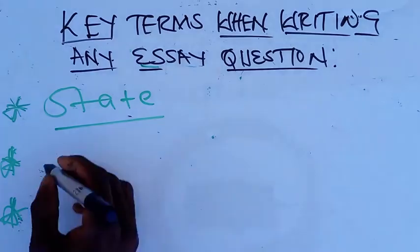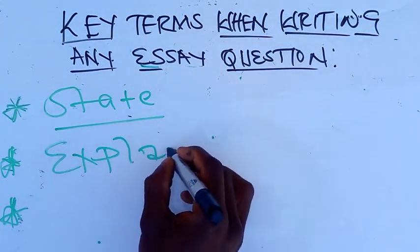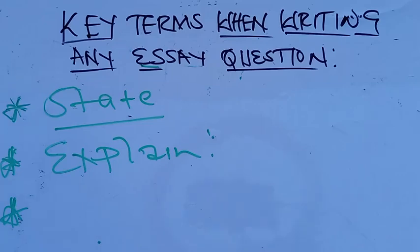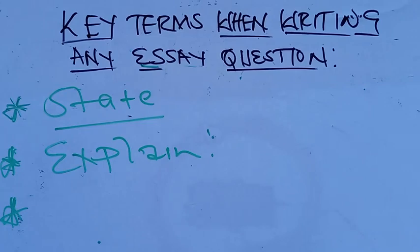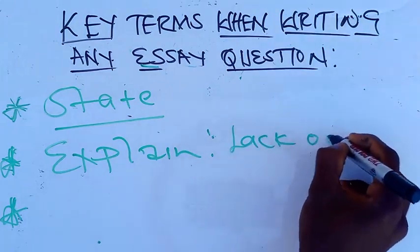The second key term is: explain. Whenever you've been asked to explain, to give an explanation of something, all you need to do is give the same points, but now you need to explain — you need to go into detail. Like, in the case of a question which would come in biology: to explain the causes of coronary heart disease. We've got reasons like lack of exercise.